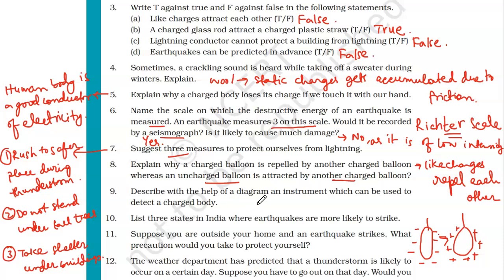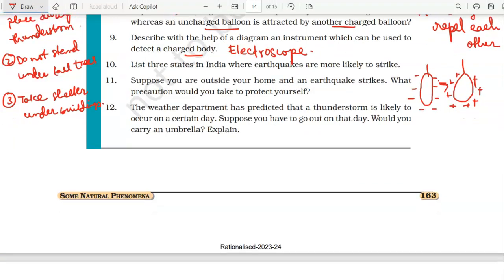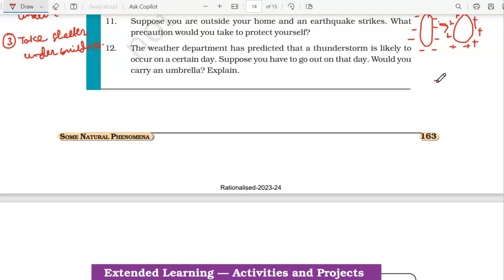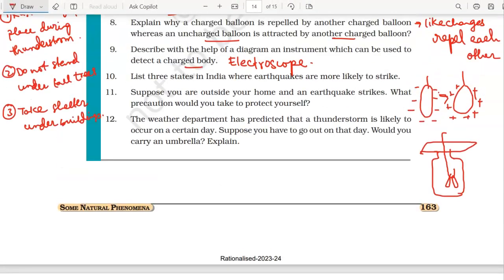Question number nine: describe with the help of a diagram an instrument which can be used to detect a charged body. You have to draw a simple electroscope, which is given in your book. You take a jar with a small opening, cover it with a cardboard, make a hole, and insert a metal paper clip with two aluminum foils hanging from it. If you bring a charged body and touch the paper clip, charges transfer and the aluminum foils show repulsion. If you bring an uncharged object, nothing happens.